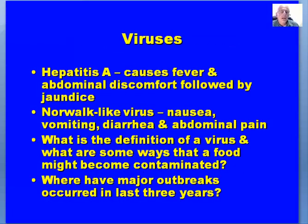Viruses can also cause food deterioration and foodborne illness. Hepatitis A can cause fever and abdominal discomfort followed by jaundice. Norwalk-like virus is a major one — we see all kinds of outbreaks on cruise ships affecting many crew members as well as passengers. Think about: what is the definition of a virus, how might a food become contaminated, and where have major Norwalk virus outbreaks occurred in the last three years?